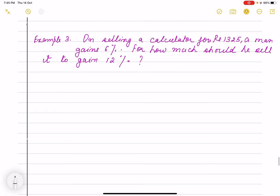Next question is: on selling a calculator for rupees 1325, a man gains 6 percent. Same way, if 100 rupees CP, then 106 is the SP. For selling a calculator, I don't know what will be my CP, so I have to find out. And selling price is 1325, so can I find out this?